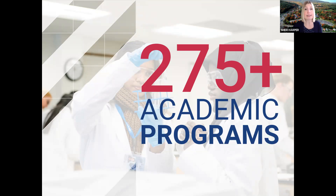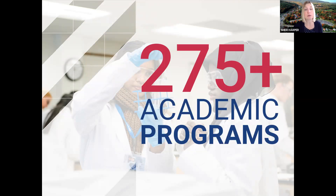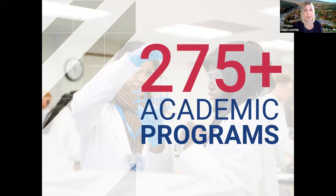Some students choose to stay at one Penn State campus for the entirety of their academic career. Others pursue the 2 plus 2 academic path, which allows a student to start at one Penn State campus for their first and sophomore years, then transition to another campus for their junior and senior years. Your major choice determines the campus of completion. University Park has the largest number of majors for completion, so a 2 plus 2 often means starting at a Commonwealth campus and finishing at University Park.